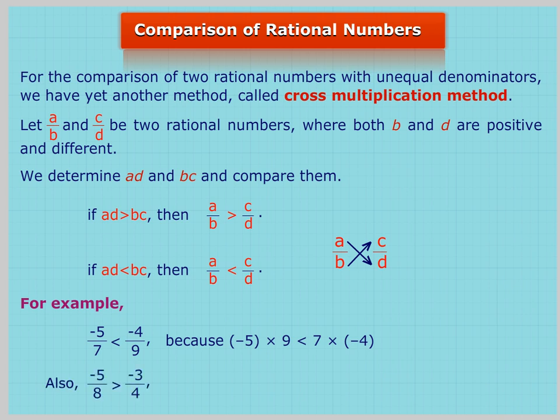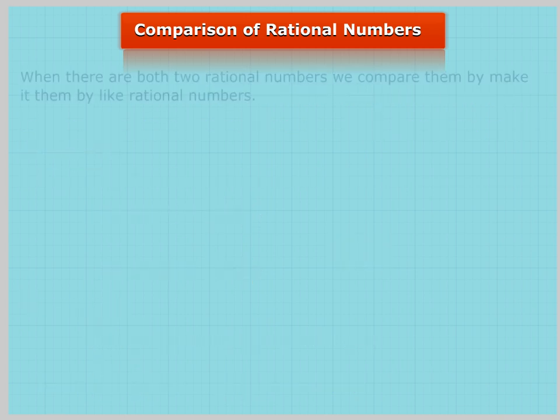Also, -5/8 is greater than -3/4 because -5 multiplied by 4 is greater than 8 multiplied by -3.